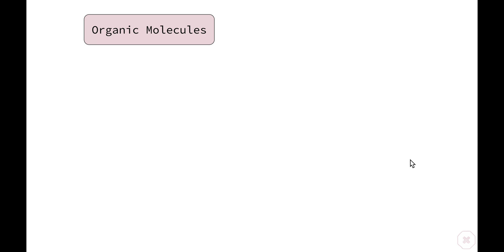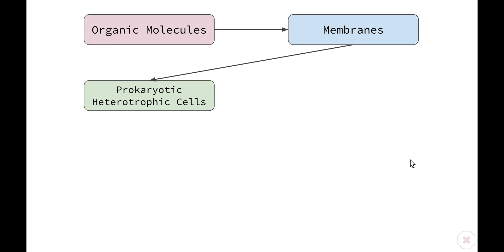If we just have a look at it really quickly as we move through, we started off with the formation of organic molecules. Then we had the formation of membranes. Then we had our prokaryotic heterotrophic cells formed that were absorbing their nutrients from the atmosphere, which then led to our prokaryotic autotrophic cells who had consumed those bacteria that were able to photosynthesize.